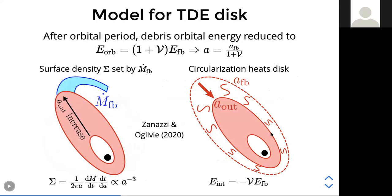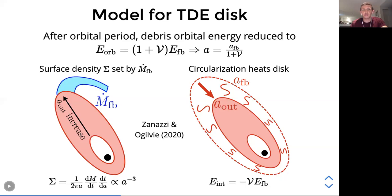The background model for these eccentric solutions assumes that after a single orbital period following the tidal disruption, the fallback debris loses some fraction of its binding energy. This causes the semi-major axis of the stellar debris to move inward. We assume this lost binding energy is deposited into the internal energy of the disk, heating the disk material and driving the thermal emission we observe from these highly eccentric disk solutions.